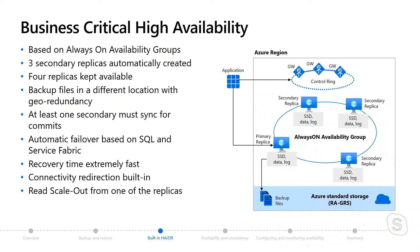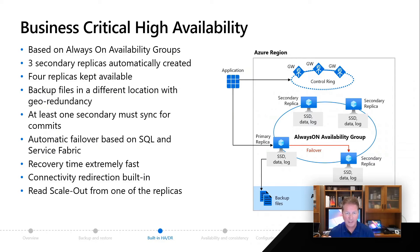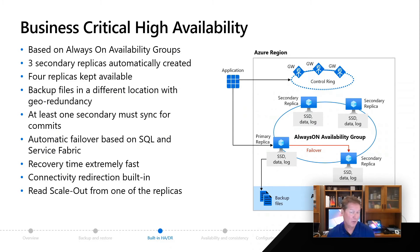When we need to do a failover, similar to general purpose, the logic is based on an integration of SQL Server and service fabric. The recovery time is extremely fast, just like an availability group on premises. We're switching over to an always-running SQL Server that's redoing log transactions, so in a failover scenario we just have to run undo recovery — which, with accelerated database recovery, is very, very fast. Recovery can be extremely fast compared to general purpose. Connectivity redirection is built in using gateways, proxy and redirection. And with business critical, one of these replicas can be used for read capabilities at no extra cost. So that's business critical built-in high availability.